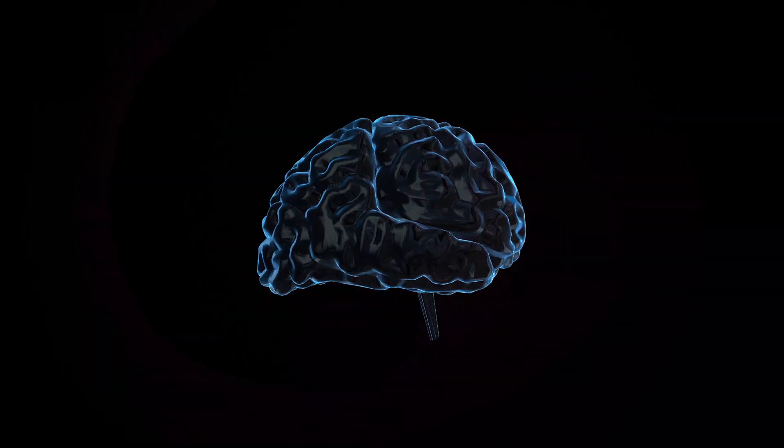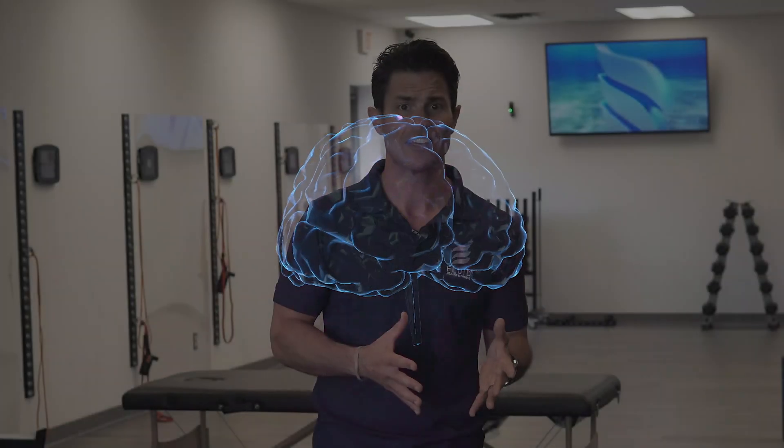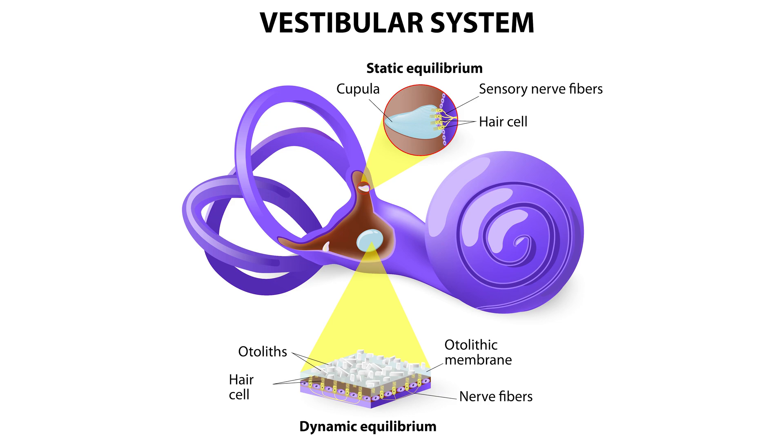There are many types of vertigo, including central vertigo, involving the vestibular structures in the brainstem and cranial nerves; peripheral vertigo, including the structures of the inner ear; and cervical vertigo, involving the structures of the neck. One specific common form of peripheral vertigo is known as benign paroxysmal peripheral vertigo. It involves small crystals in the cochlea that can dislodge and affect the function of the inner ear.